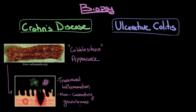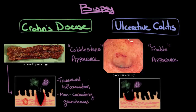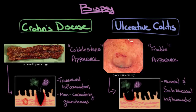Ulcerative colitis has a very different gross appearance — the walls look much smoother because of the continuous lesion, and they have what's described as a friable appearance, meaning if you were to touch the wall it looks like it would easily bleed or slough off. When this is seen, a biopsy is taken to look at under the microscope, which reveals the hallmark lesion of ulcerative colitis: inflammation contained only in the mucosal and submucosal layers, which is very different than Crohn's disease. Once this pathologic specimen has been taken and the hallmark findings are identified, a diagnosis of Crohn's disease or ulcerative colitis can finally be made.